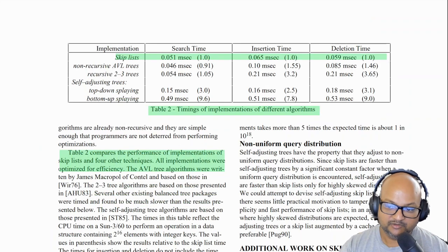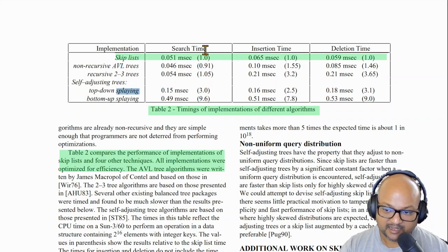The author also did some quick benchmarks comparing skip lists with balanced trees like AVL trees or splay trees. And here you can see that in terms of lookup times it is about on par with AVL trees but much faster than splay trees.